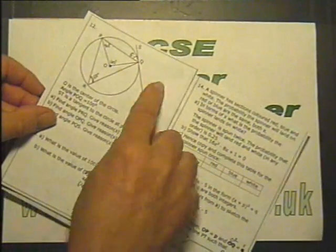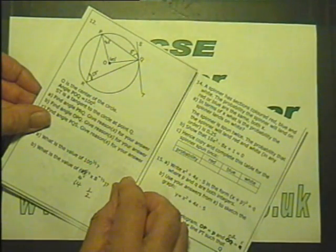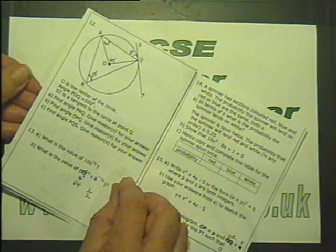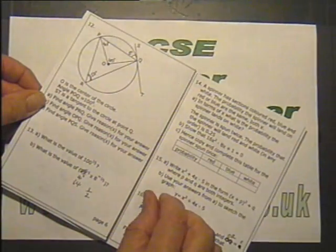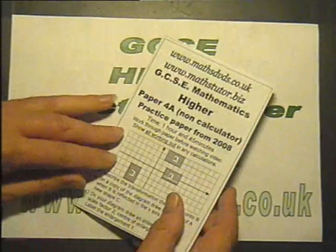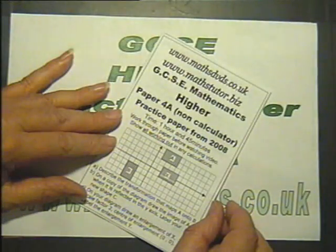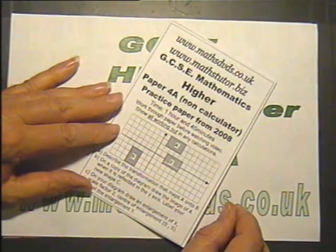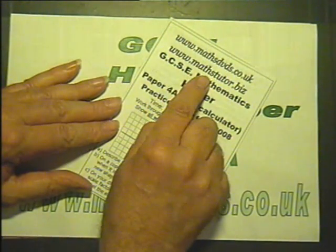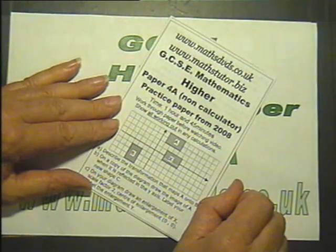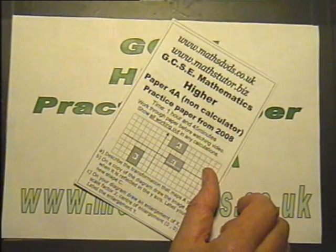Question number 12. I'll work through the questions, explaining how to do it and making comments along the way, which I hope you'll find useful and give you the marks. Now if you want to see the rest of this paper and work through it with all the solutions and marking, you'll have to go to mathsdvds.co.uk or mathstutor.biz and buy the DVD. But if you want your freebie, then this is it.